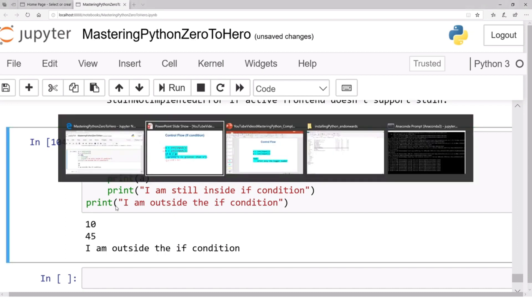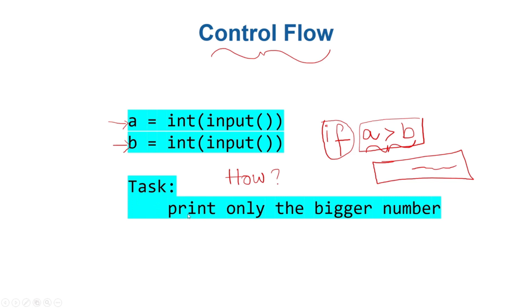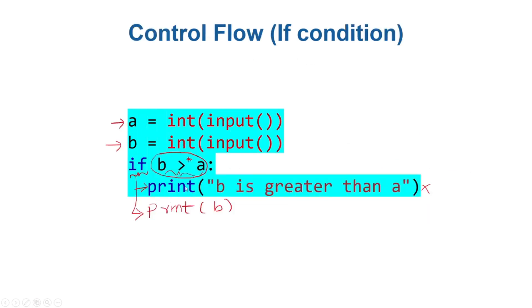But are we done? We only print the bigger number if `a` is bigger — we haven't solved the task yet. What if `b` is bigger? We haven't handled that. So how do we print only the number that is bigger? Maybe we should apply another `if` condition: `if b > a: print(b)`, and `if a > b: print(a)`. Why not?